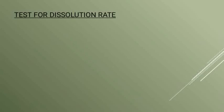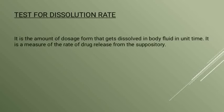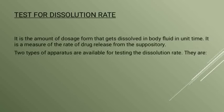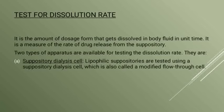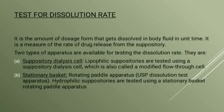The next test is the test for dissolution rate — the amount of drug that gets dissolved in body fluid per unit time, which measures the rate of drug release from the suppository. Two types of apparatus are available: the first is the suppository dialysis cell, also called modified flow-through cell, used for lipophilic suppositories; the second is the stationary basket or rotating paddle apparatus (USP dissolution test apparatus), generally used for hydrophilic suppositories.